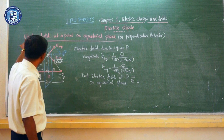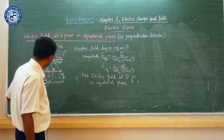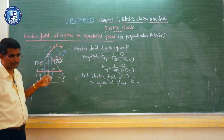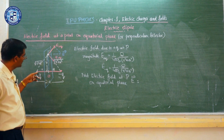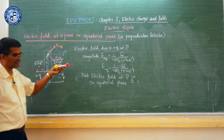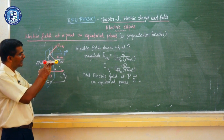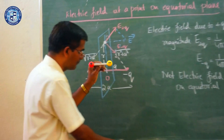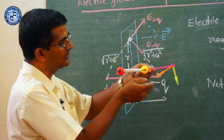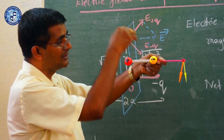Friends, now we will go for another derivation: the electric field at any point due to a dipole on the equatorial plane. The equatorial plane, also called the perpendicular bisector, is the plane passing through the center of the dipole and perpendicular to its axis. Suppose I have a dipole model with a positive charge and negative charge separated, and the axial line is the line passing through this axis — that derivation has already been done.